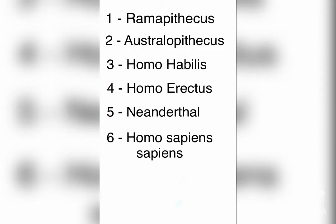These six stages are: Ramapithecus, Australopithecus, Homo habilis, Homo Erectus, Neanderthals, and Homo Sapiens Sapiens.